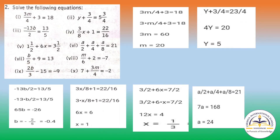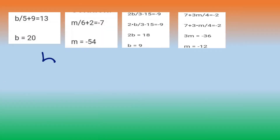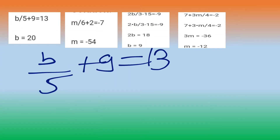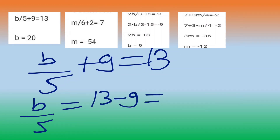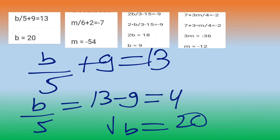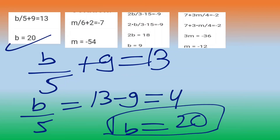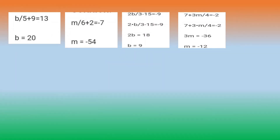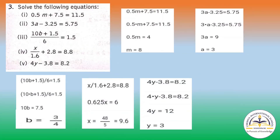Now we will solve question number 7: b by 5 plus 9 equals to 13. So b by 5 equals to 13 minus 9, that will be 4. Now b equals to 5 into 4, that is 20. So b equals to 20 will be the answer. Now you have to solve the next two questions.